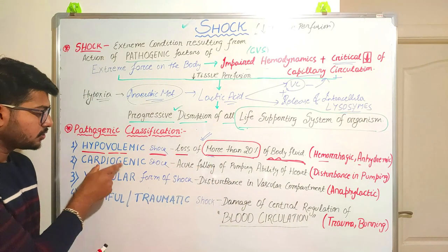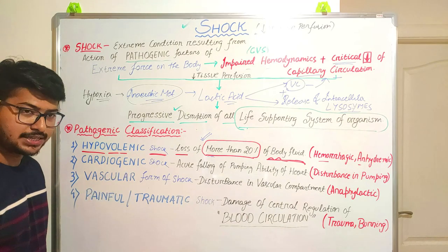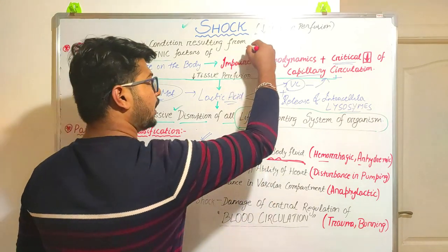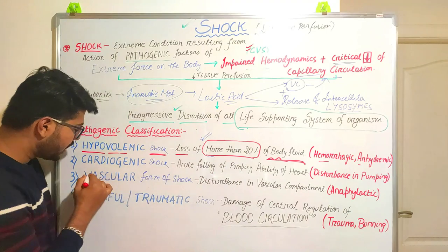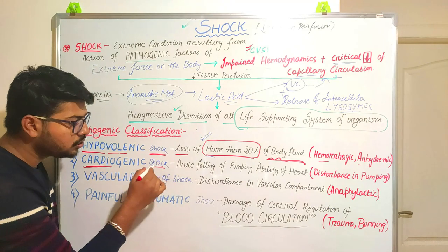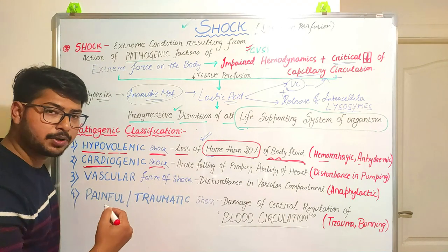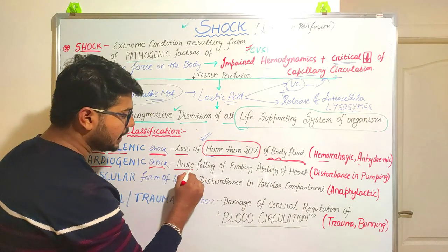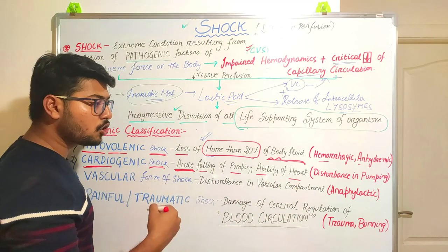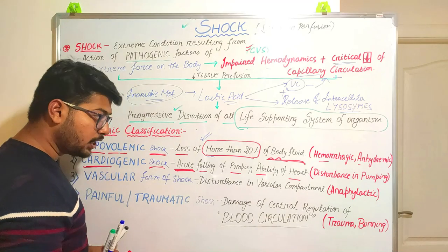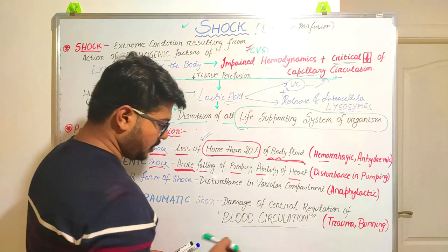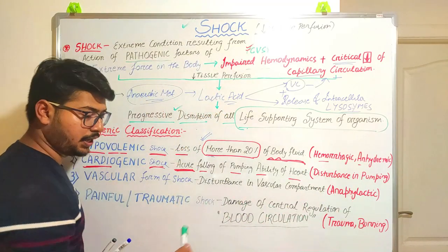Next comes cardiogenic shock. According to the mechanism, this shock is primarily dependent upon the cardiovascular system — the heart. If there is an acute fall in the pumping ability of the heart, if the heart is not able to pump enough blood throughout the body, this problem will arise. So it is characterized by a disturbance in the pumping of the heart.